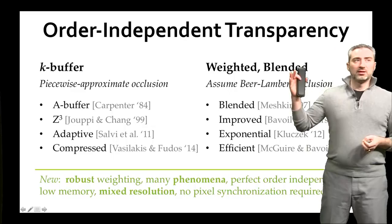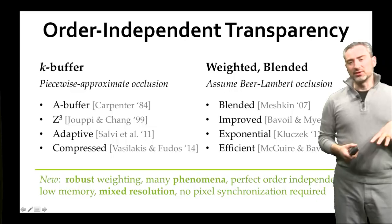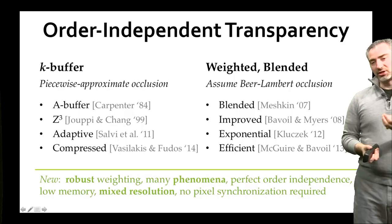What's just around the corner and starting to be used are order-independent methods. These have the advantage that you can submit a single monolithic draw call — you don't have to order surfaces or worry about interpenetration. There's a family of K-buffer methods, which build a small linked list in memory and then perform sorting per pixel, and the weighted blended methods.